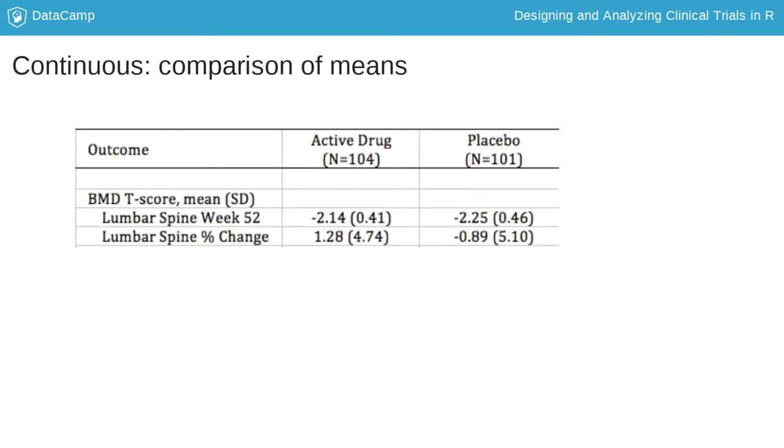In our example, bone mineral density change is a continuous measure. If we find that the changes from baseline within the groups are normally distributed, we can test whether the means are equal using a two-sample t-test.